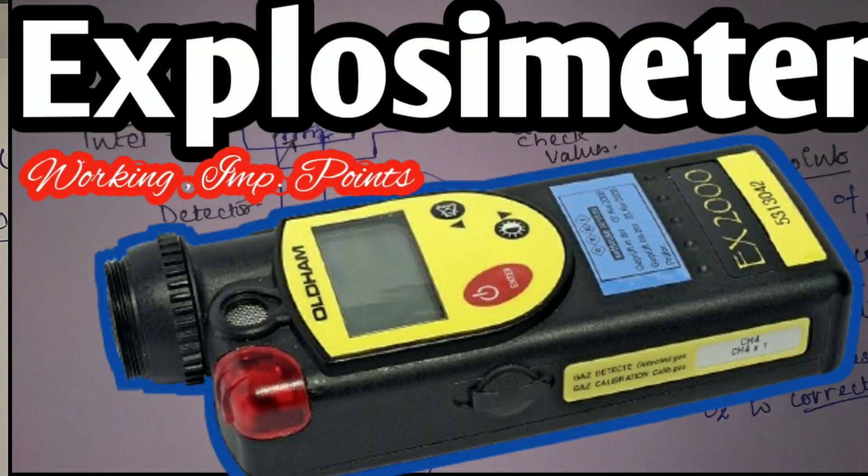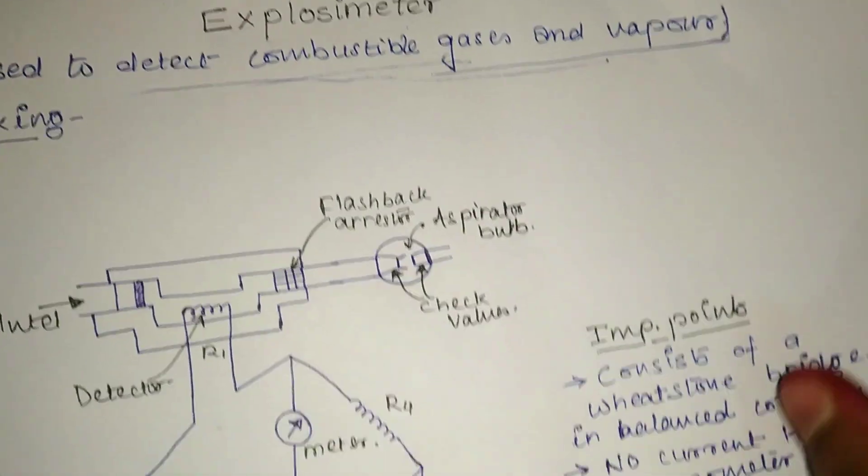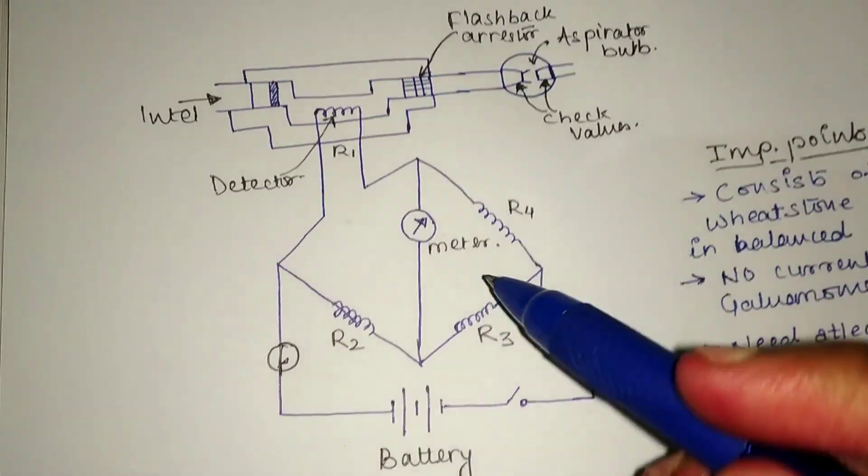Hello and welcome. In this video I will discuss the explosimeter. As you know, it is used to detect combustible gases and vapors, so it is also known as a combustible gas detector. This is the diagram of the explosimeter.